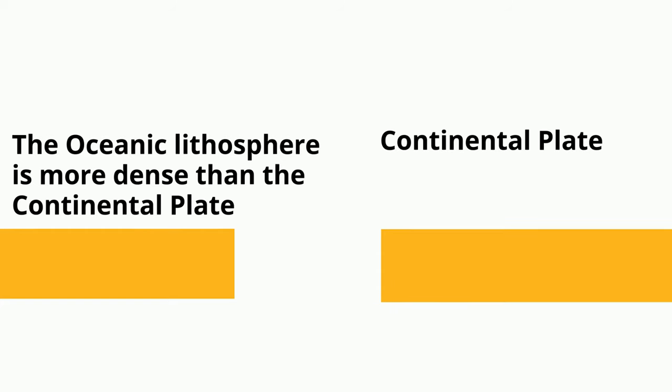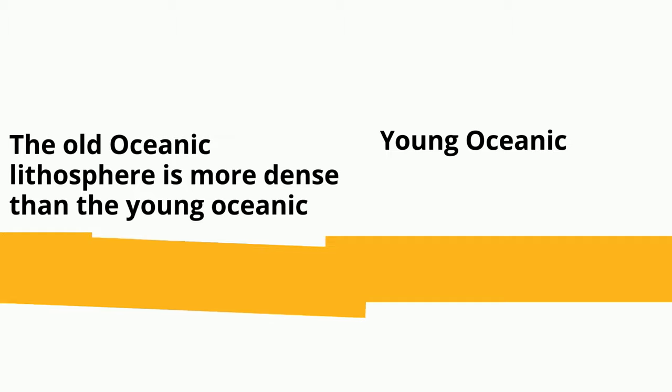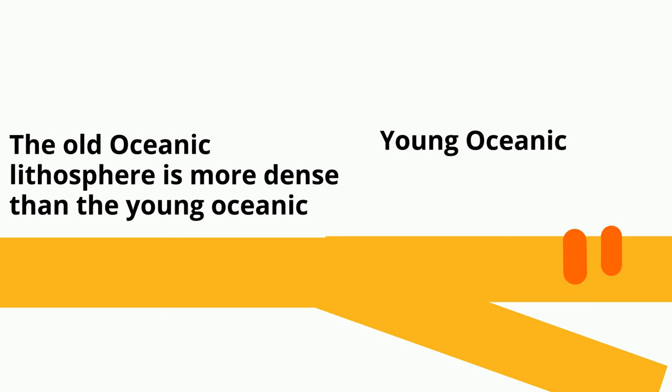When oceanic lithosphere collides with oceanic lithosphere, a similar event occurs. The older oceanic crust is more dense than the younger crust and subducts underneath. As it subducts, magma begins to rise through the surface and this can create volcanic island arcs.